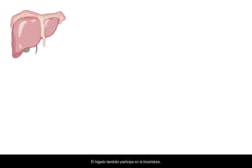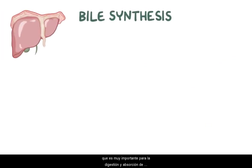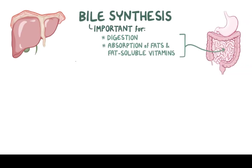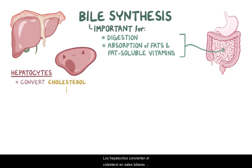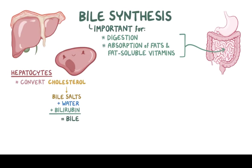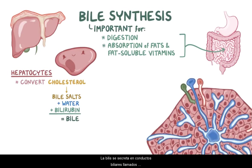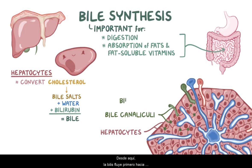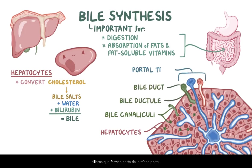Now, the liver is also involved in bile synthesis, which is very important for digestion and absorption of fats and fat-soluble vitamins in the small intestine. Hepatocytes convert cholesterol into bile salts, which along with water and bilirubin make up bile. Bile is secreted into bile ducts, called bile canaliculi, found between adjacent hepatocytes.